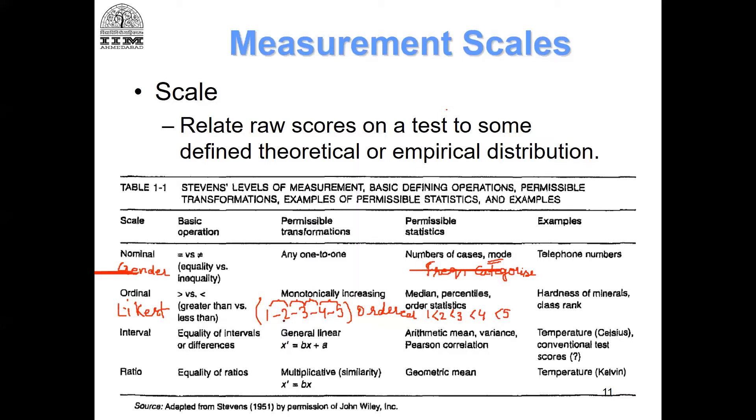For example, is the difference between strongly disagree to disagree the same as disagree to neutral? We cannot say for sure whether these differences are the same. The permissible statistics you can do are medians, percentiles, order statistics, rank order, and non-parametric kind of analysis.